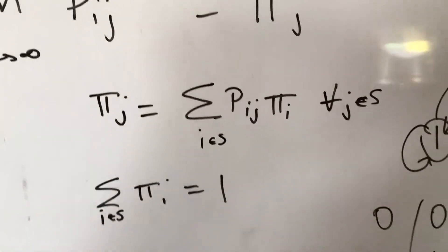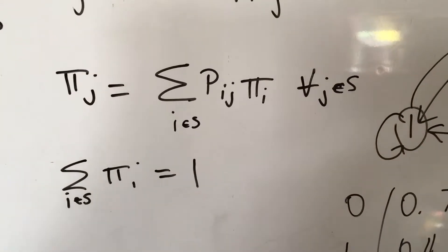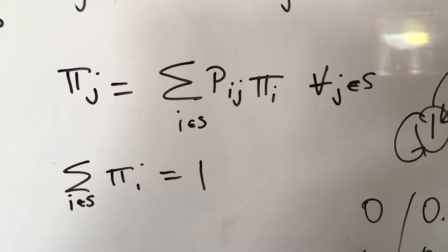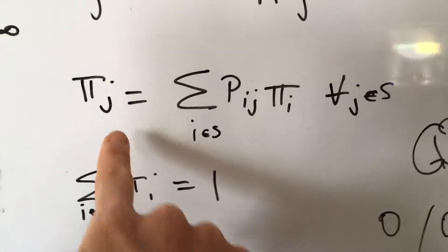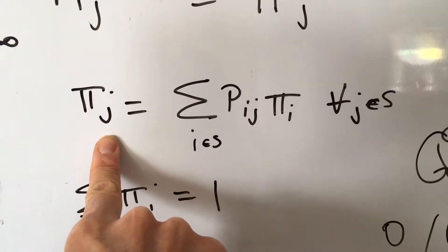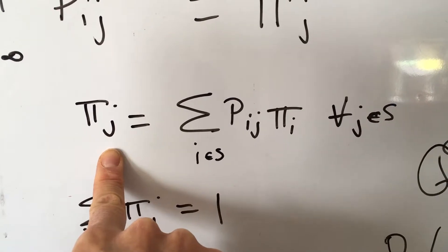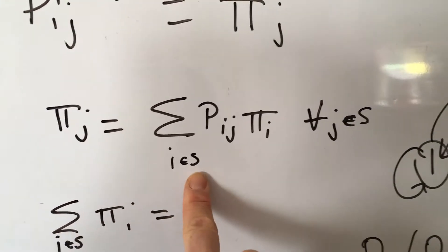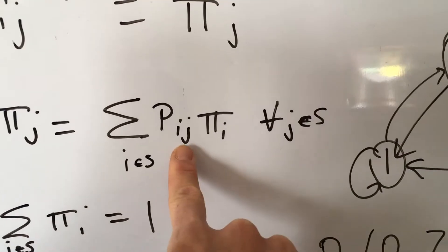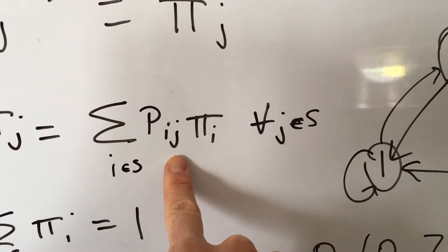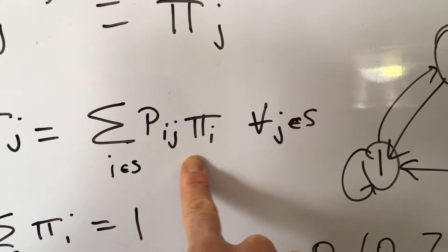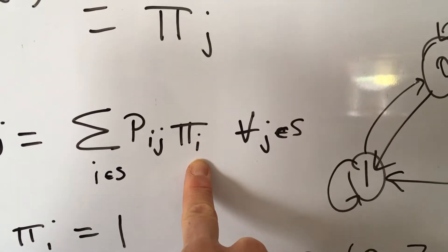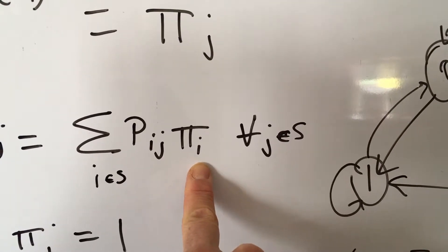We also have our set of equations, which you're going to use to calculate your steady state probabilities. The long-run probability that the system is in state j is the sum across all possible states of the probability of going from each state into j, times that limiting probability of being in state i — the long-run probability of starting in state i.